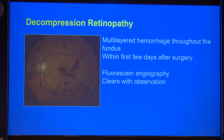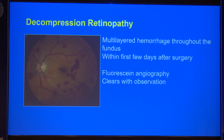Next is decompression retinopathy. This happens because of the sudden lowering of intraocular pressure from a very high level to very normal or below-normal levels. These are multi-layered hemorrhages throughout the fundus, which can happen in the sub-ILM or superficial layers and even in the sub-retinal spaces. It happens within the first few days of surgery, and if the hemorrhage is located at the fovea, the patient may have a vision drop. If the patient doesn't have comorbidities and there is no predisposing factor, observation will help. Sometimes if the patient has comorbidities, fluorescent angiography is needed to rule out CRVO.